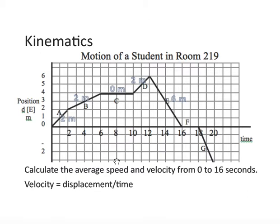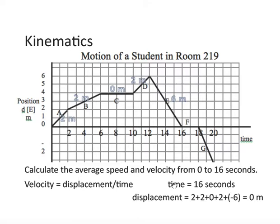Now, velocity is different. Remember, it's displacement over time. So for average velocity, it's displacement, not distance, displacement. The time, once again, is 16 seconds, of course. That doesn't change because we're going from zero to 16 seconds. But the displacement...